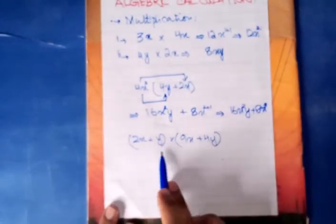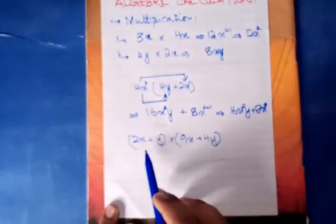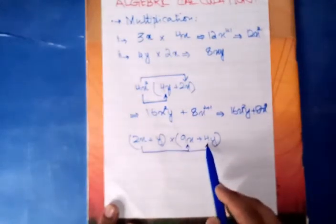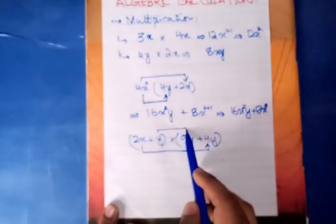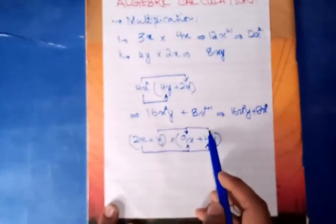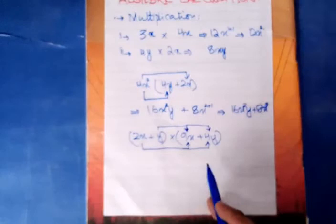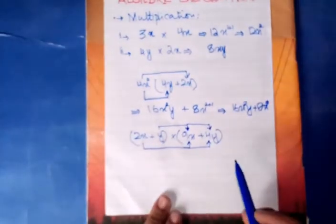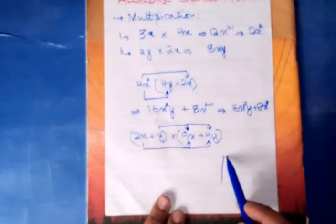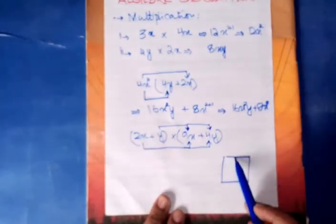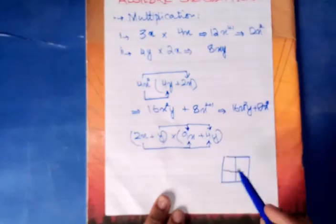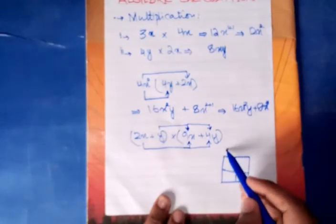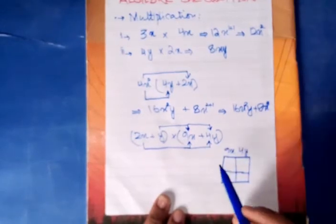Here we will multiply two brackets together. First I will multiply these two terms, then the same with this, then these two terms and this with this. If you are confused, an easy way is to draw a grid. If you have four numbers to multiply, you make four boxes. You write one value on the top, that is 9x and 4y, and the other value on the side, that is 2x plus y.